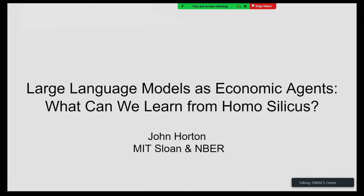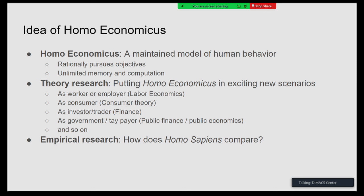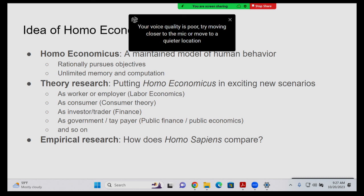Let me start with my view of what economists do, at least the kind of economist that I am. You start with a maintained model of human behavior where people rationally pursue objectives. It's fine to assume they have unlimited memory and computation, and this basic view of how people act gets maintained across lots of research.